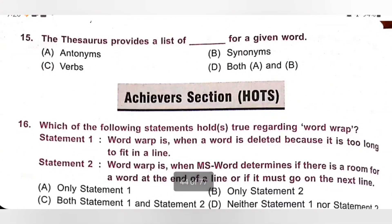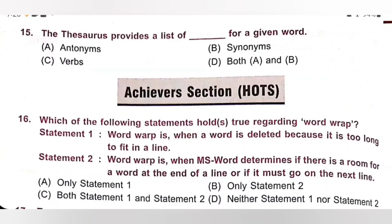Fifteenth question: The Thesaurus provides a list of — for a given word. A. Antonyms. B. Synonyms. C. Verbs. D. Both A and B. The Thesaurus will give both synonyms and antonyms — it is like a dictionary. Option D, Both A and B, is the correct answer.